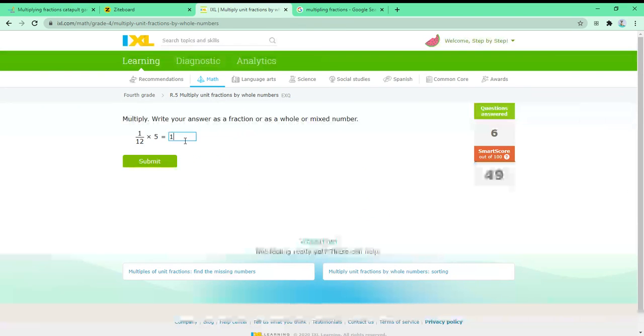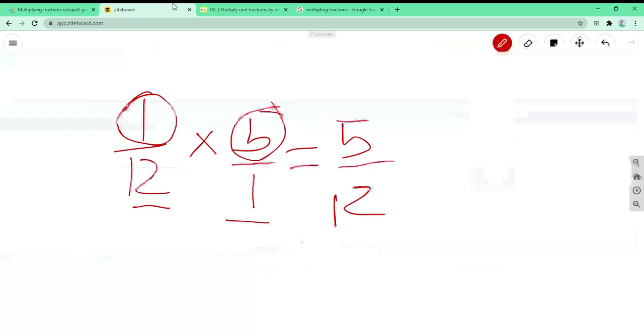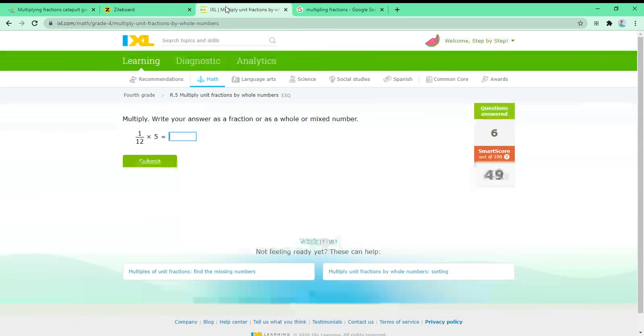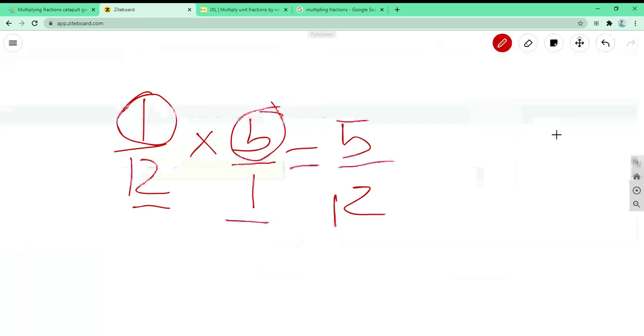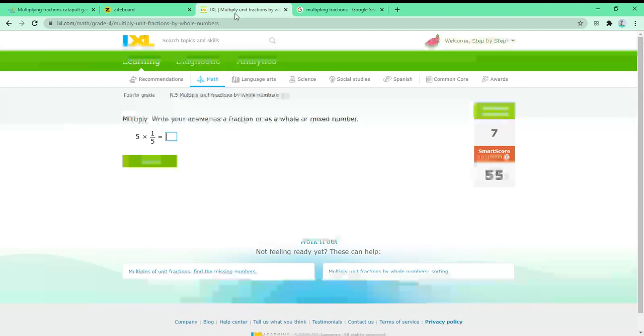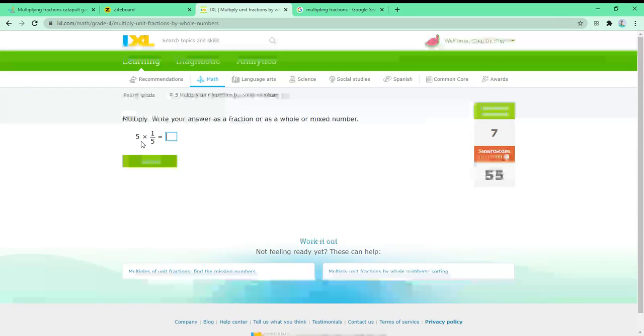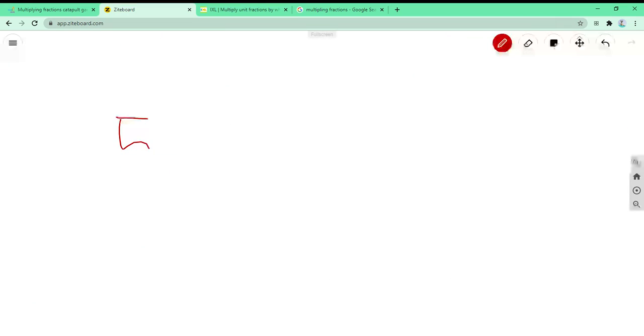So the answer is 5 over 12. Now the next problem. So we have to multiply 5 times 1 over 5.